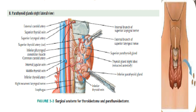Anteromedial traction is applied to the lobe of the thyroid gland and the middle thyroid vein is divided. The areolar tissue between the thyroid gland and the common carotid artery is separated using a combination of blunt and sharp dissection, allowing for further anteromedial mobilization. The superior thyroid artery and veins are exposed by applying caudal and lateral traction to the thyroid parenchyma at the superior pole, facilitating individual ligation of the superior pole vessels close to the thyroid gland, staying lateral to avoid injury to the external branch of the superior laryngeal nerve (EBSLN).